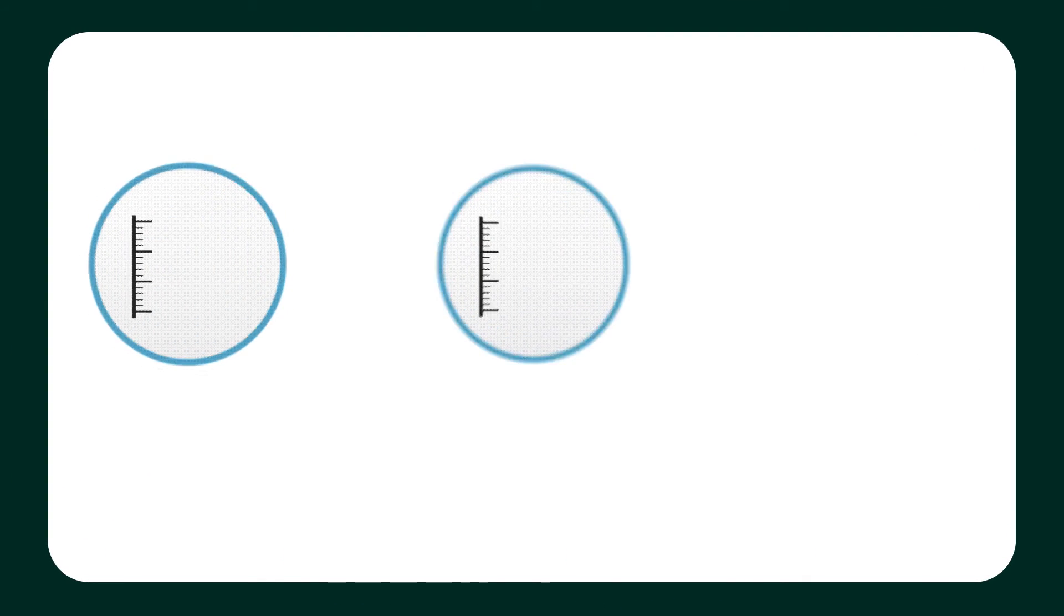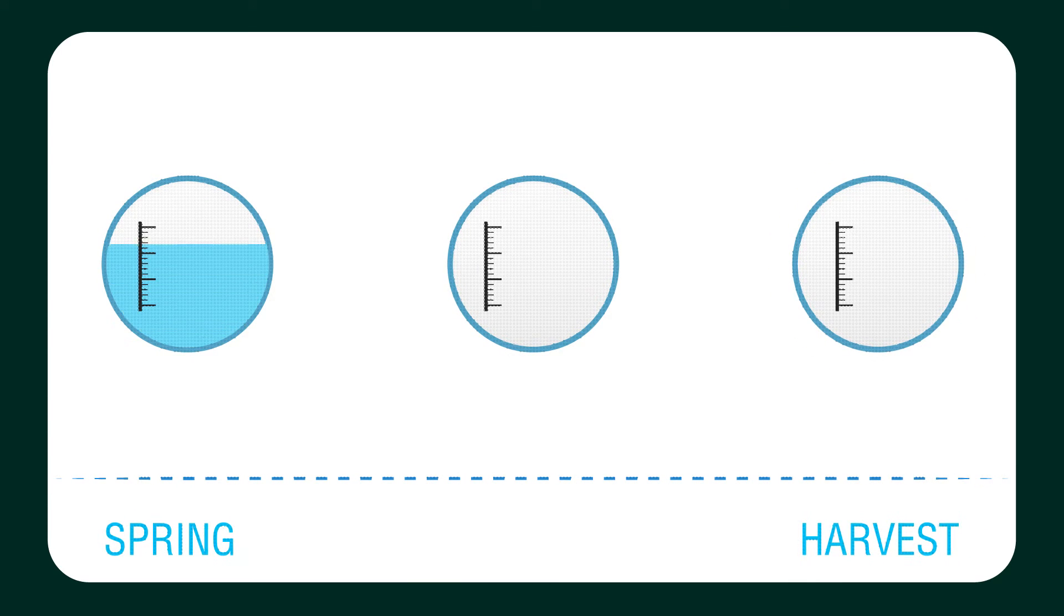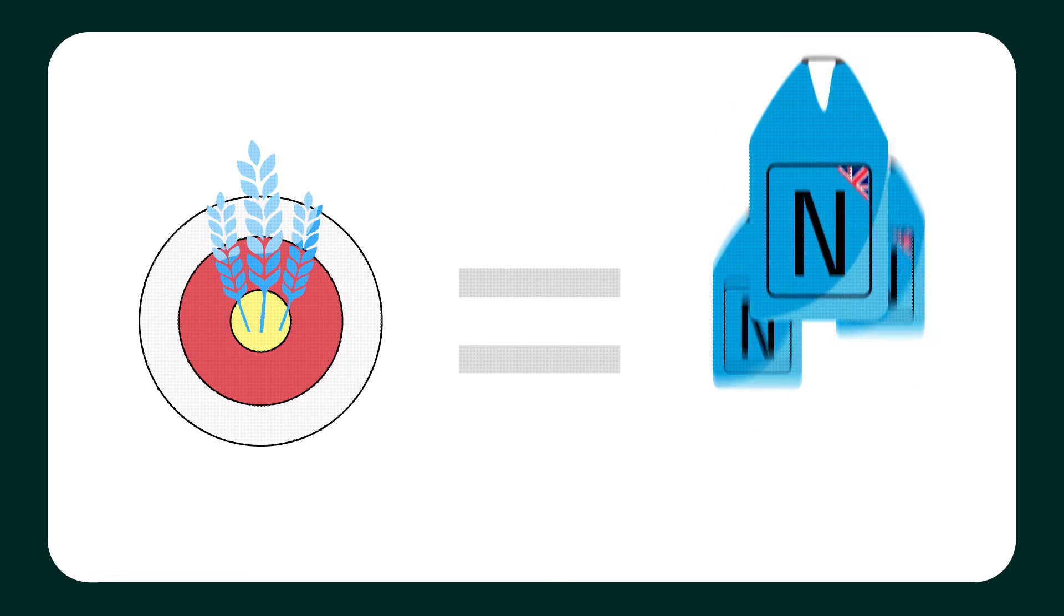NCALC lets you know the optimum rate at which your nitram should be applied to deliver the best performance for your crop. For crops with a higher yield potential, NCALC provides recommendations to reach your crop aspirations.